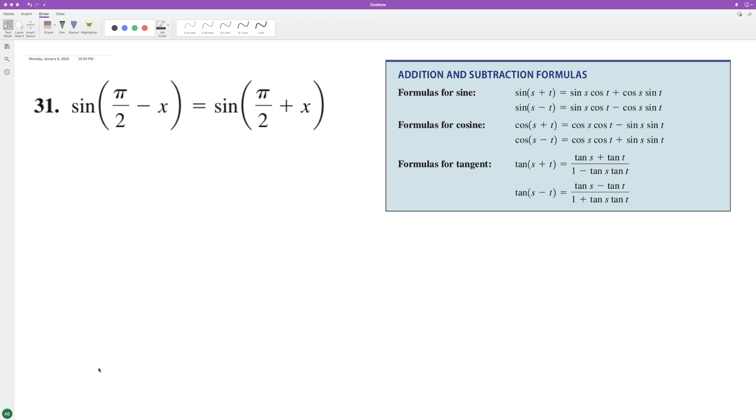The following identities are the exact same, so we'll use the two sine formulas up here. It's going to be the sine of pi over 2 sine of x minus cosine pi over 2 cosine of x, and then for the